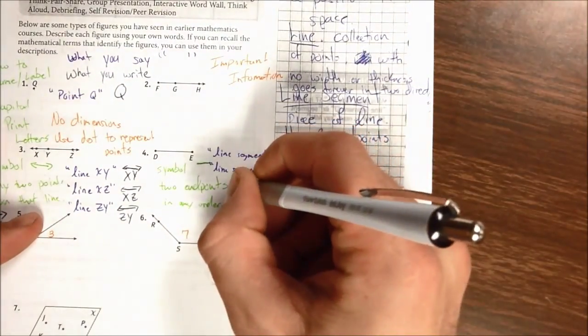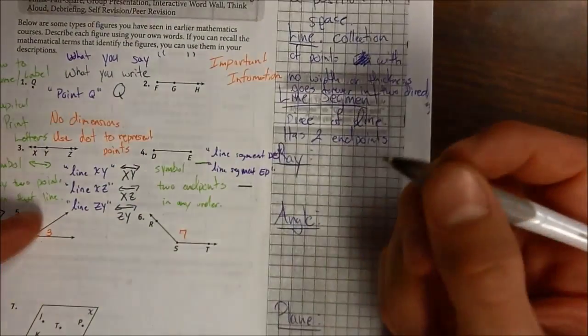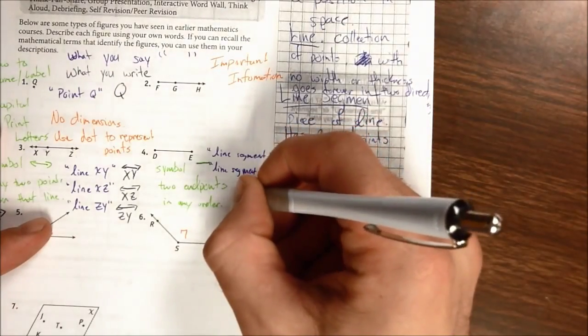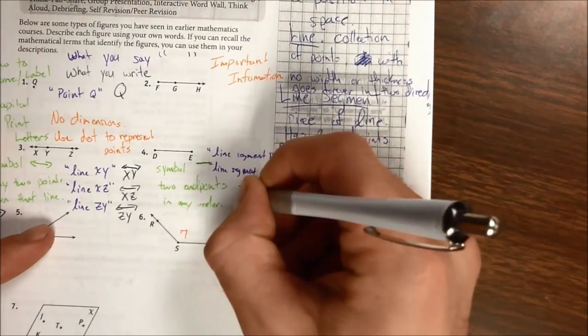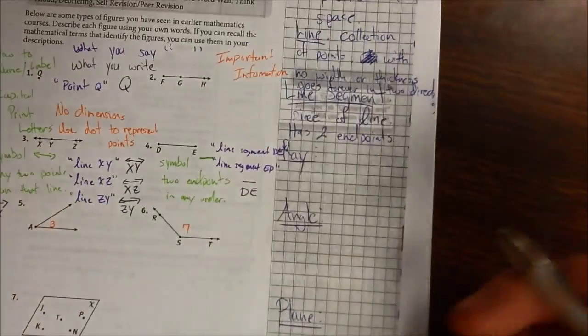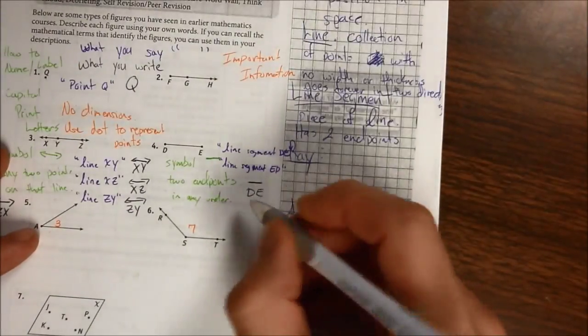So the shorthand notation is use that symbol, which is a bar with no arrowheads, a line. And then underneath that, using your capital print letters, you would write the two endpoints. So in this case, this is segment DE.